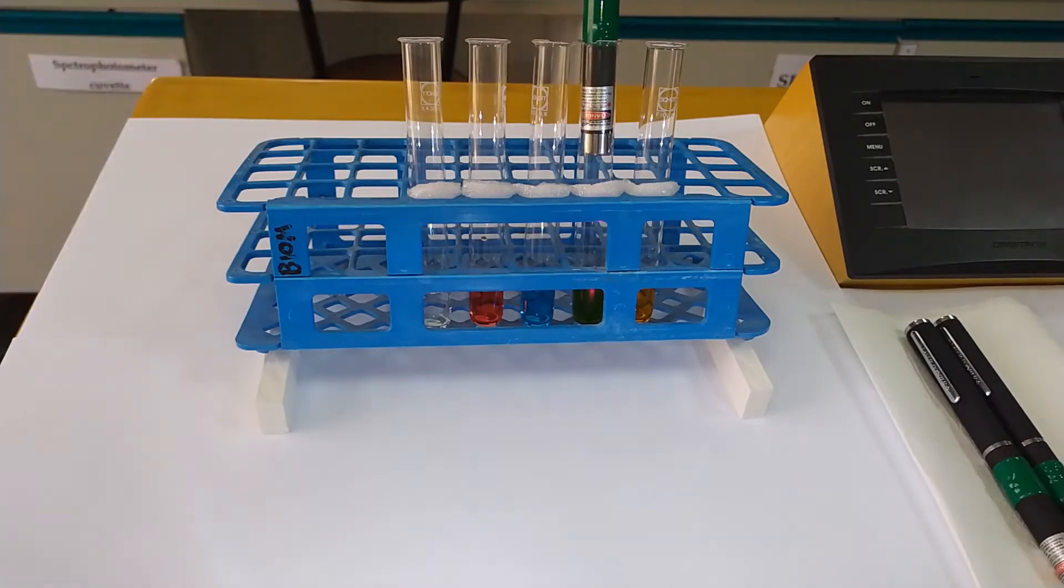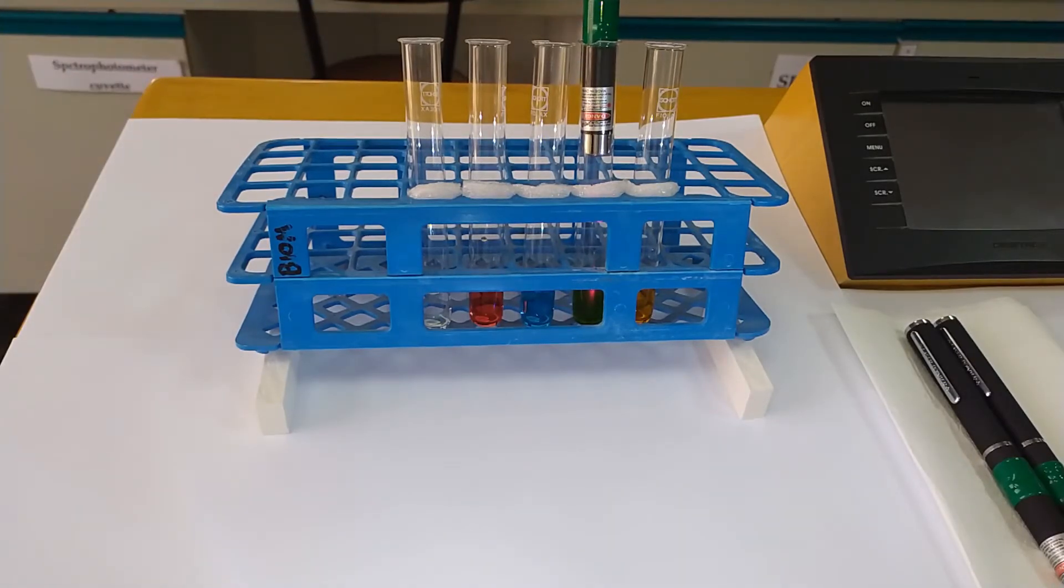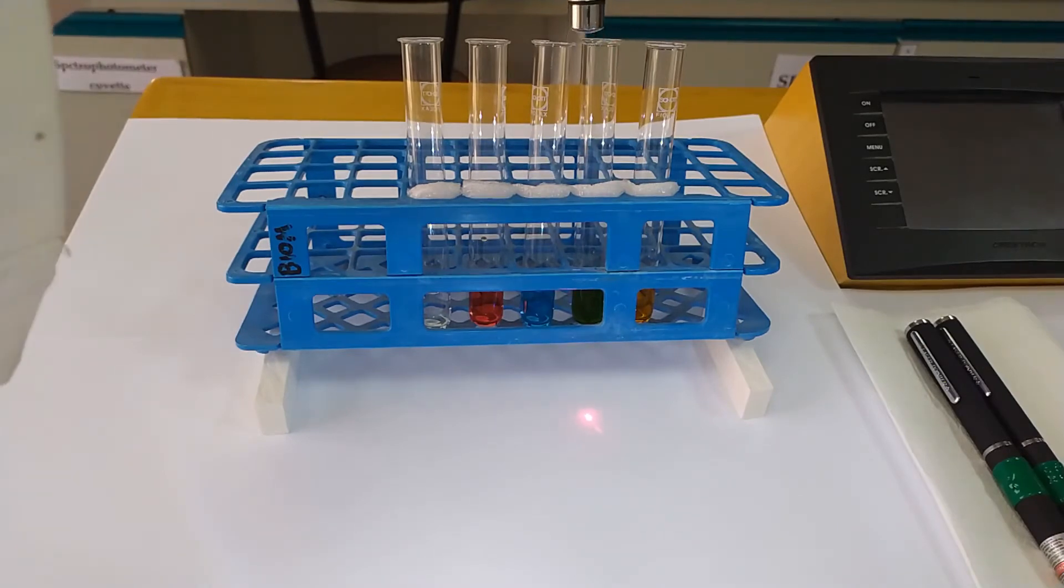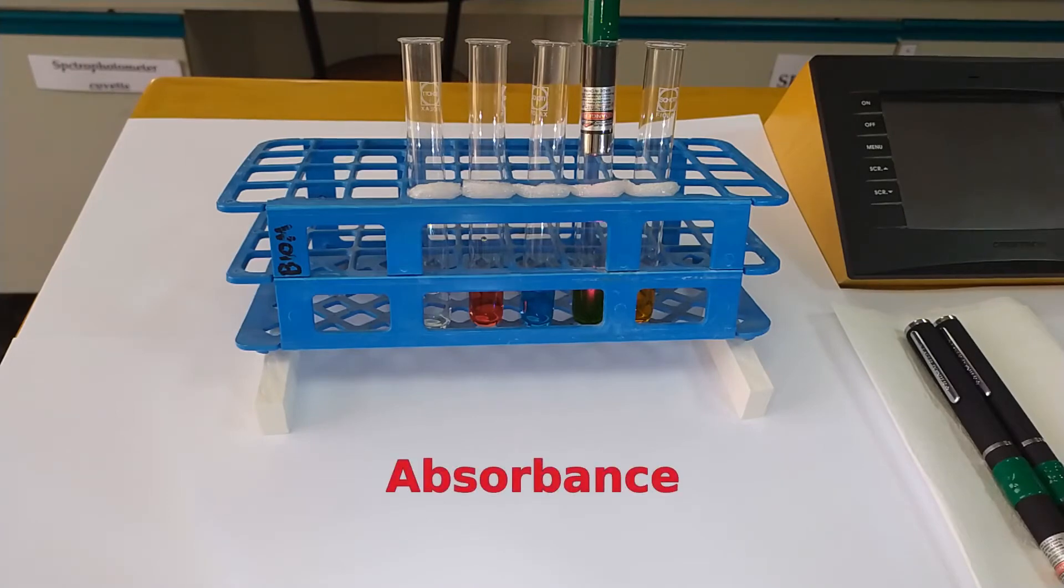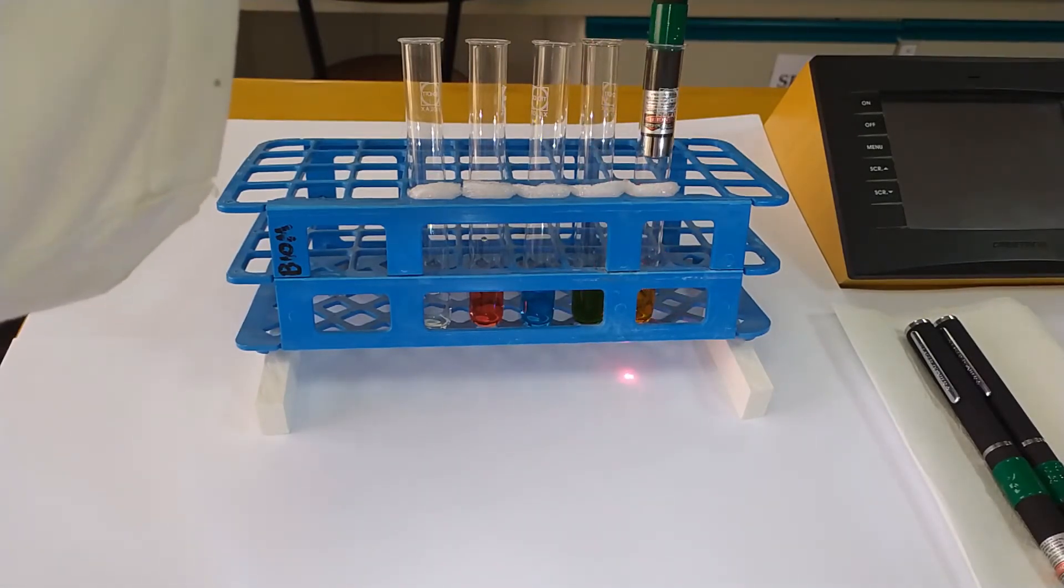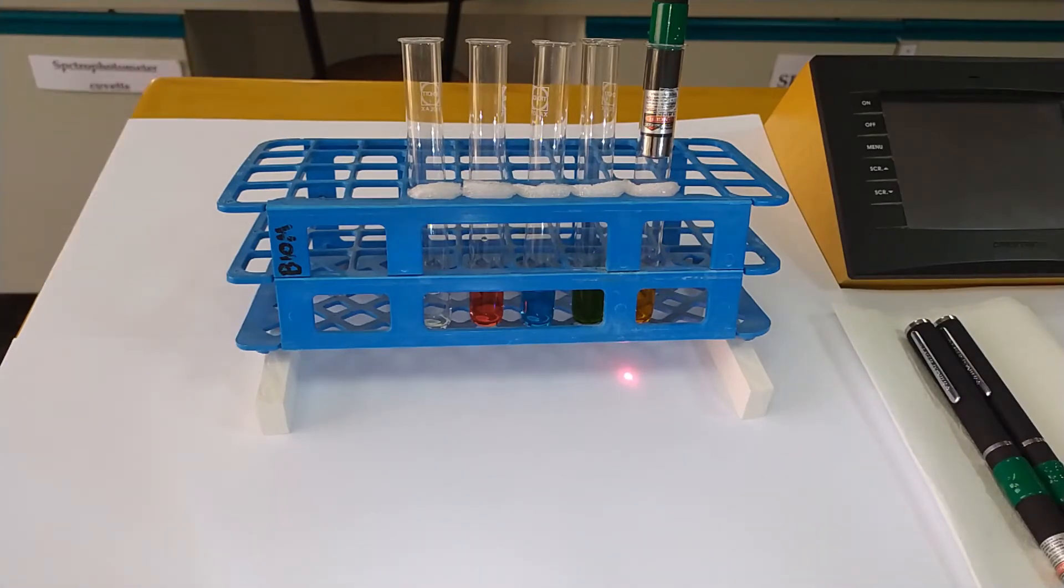Now let's try this with the chlorophyll tube. Hmm, nothing passes through. Again, just to confirm, the light is on, but it is being blocked by the sample. We call this absorbance. Let's continue on to the yellow-orange tube. And here again, the light passes through.